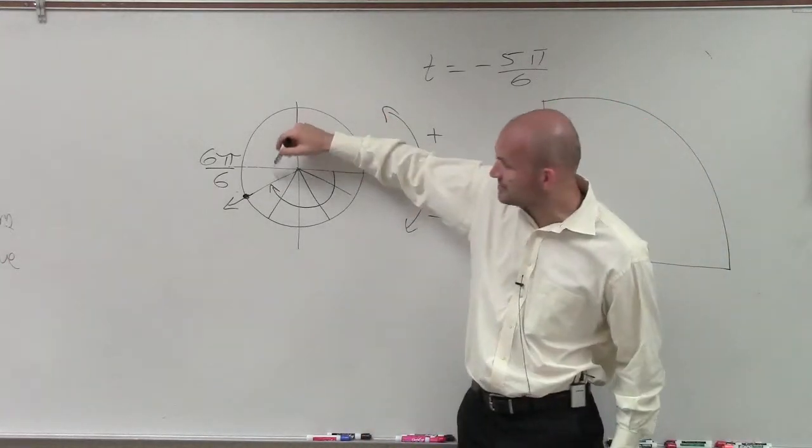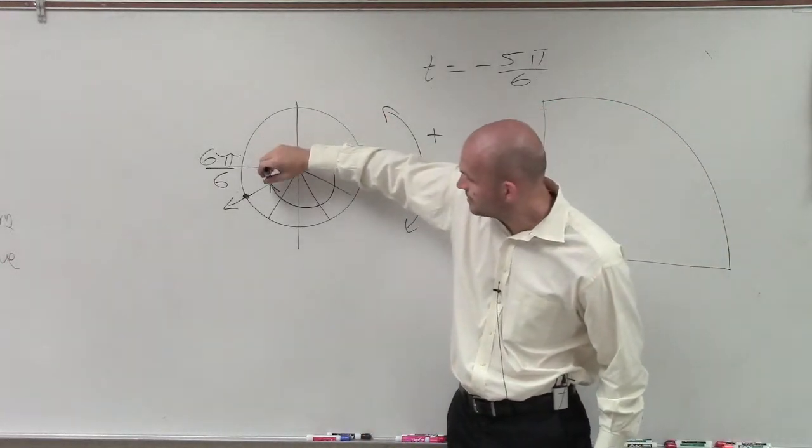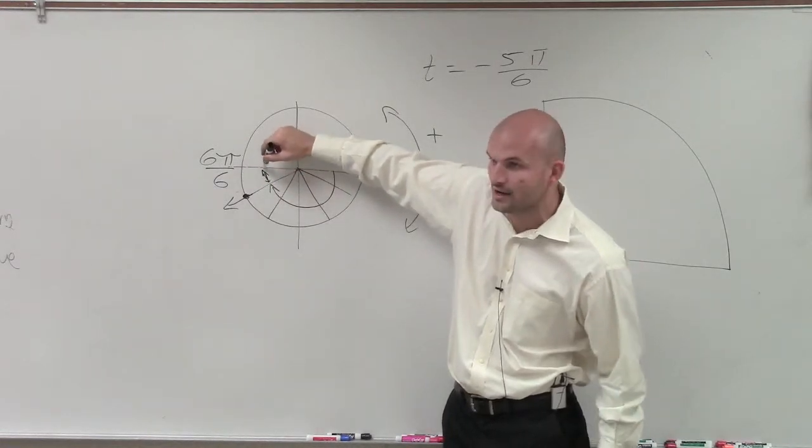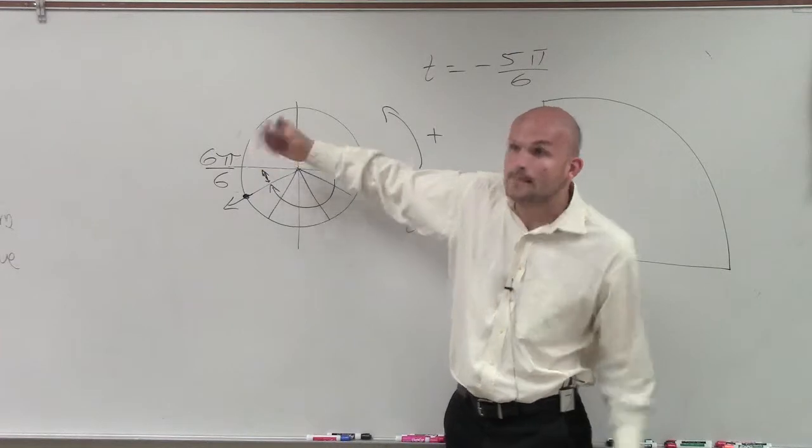And what I notice is that this is 5 pi over 6. What is this distance right here, Brittany, that needs to get? This is negative 5 pi over 6. To get to here, how far do I need to travel? Pi over 6, right?